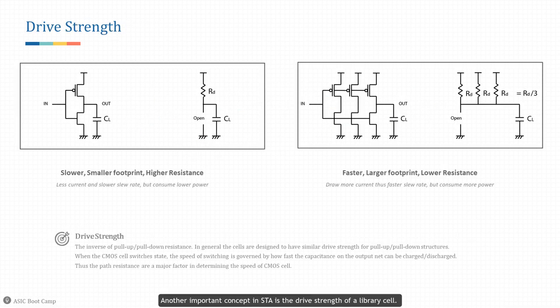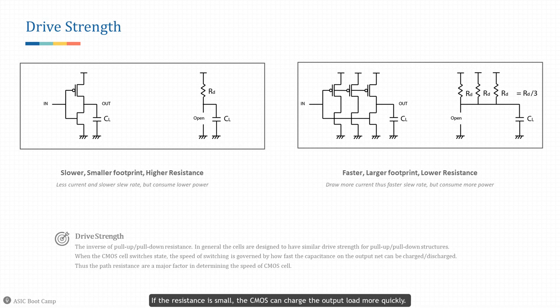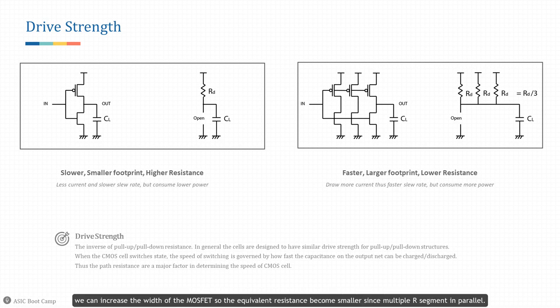Another important concept in STA is the drive strength of a library cell. The ability for a cell to drive a load is inversely related to its output resistance. The output resistance and the load capacitance form an RC network. If the resistance is small, the CMOS can charge the output load more quickly. To achieve a smaller resistance we can increase the width of the MOSFET so the equivalent resistance becomes smaller, since multiple R segments in parallel reduce resistance.